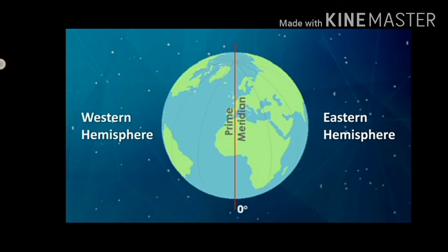These meridians are drawn at an interval of one degree on both sides of the prime meridian. The meridians which are towards the east of the prime meridian are marked as degrees east and on the west as degrees west.